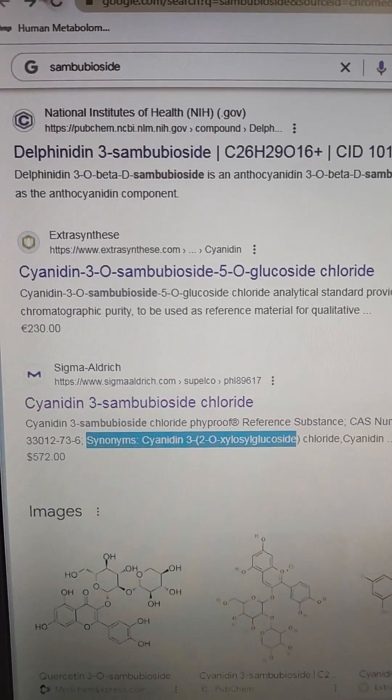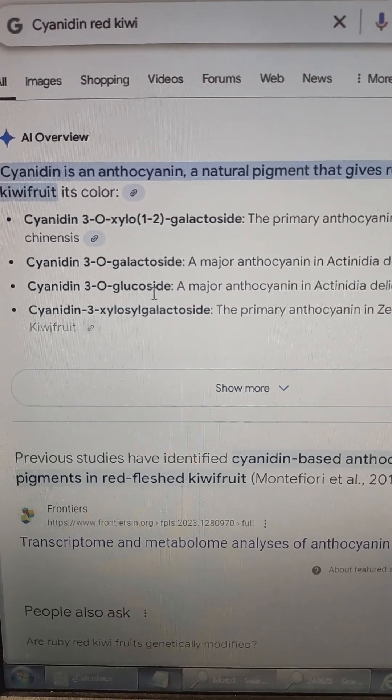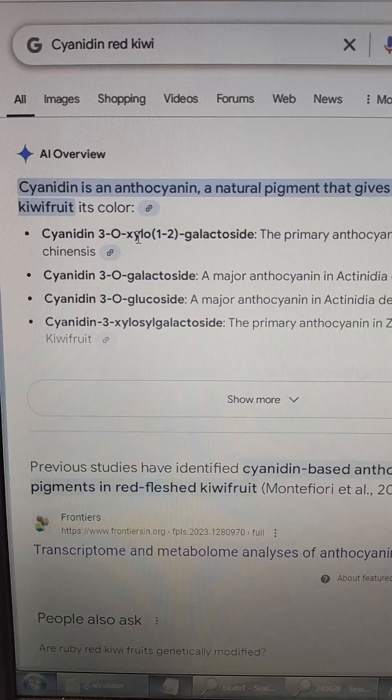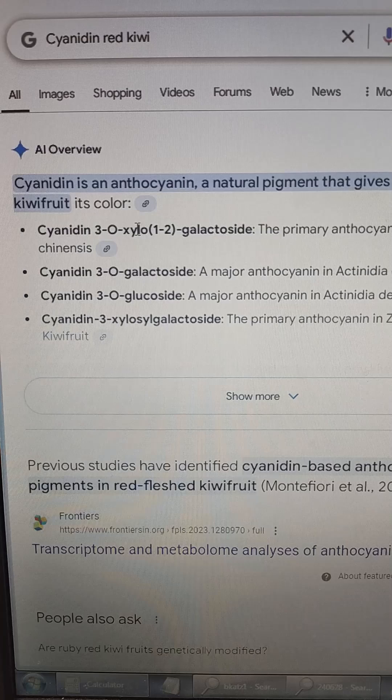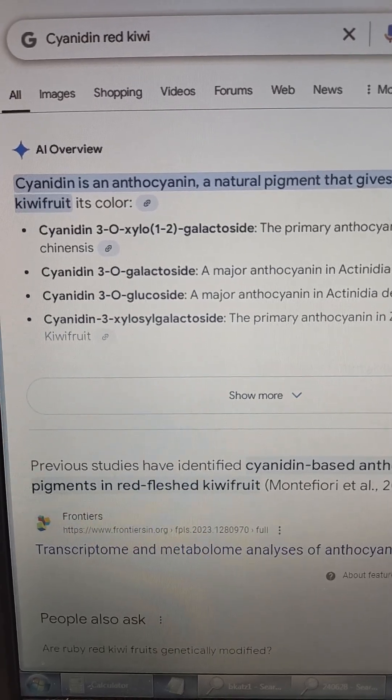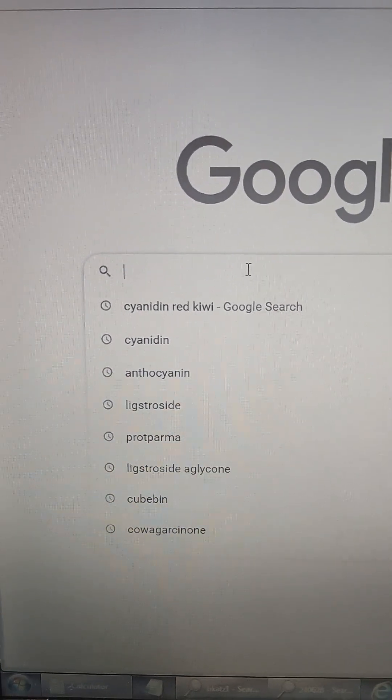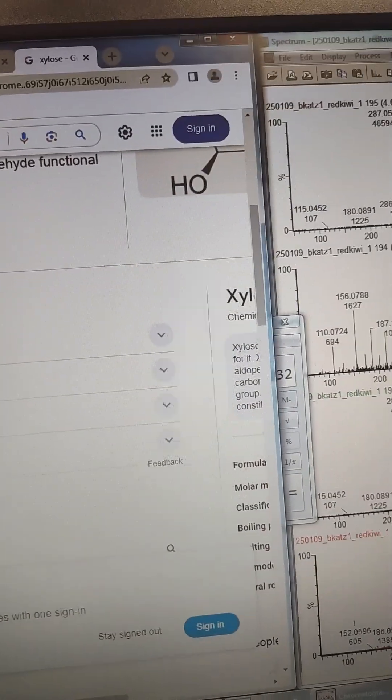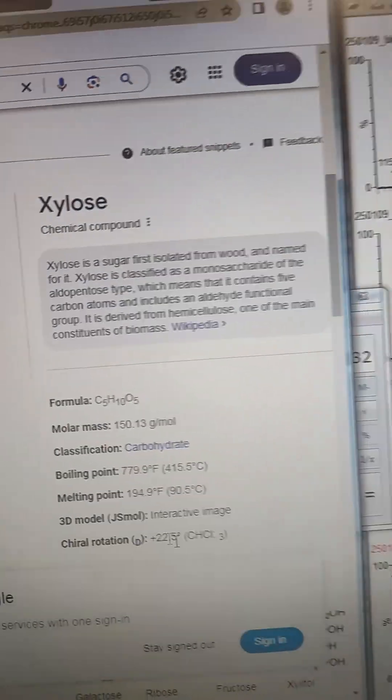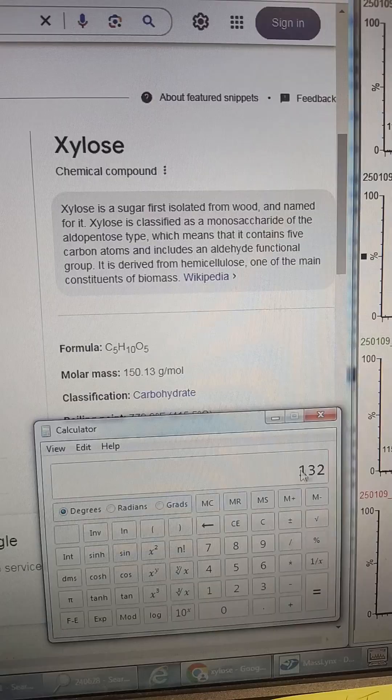So you search cyanidin, anthocyanin, natural pigments in red flesh, red kiwi fruit. It looks like it could be a galactoside, a xylo galactoside. And so if we look up xylose, we know galactoside and glucoside are both 162 conjugates because they're 180 minus the water of conjugation. If we look up xylose, it's kind of an unusual fruit sugar, wood sugar actually. And that's 150. And so 150 minus 18 for the conjugation is 132.